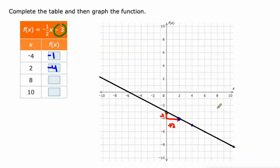When x is 8, y is negative 7. And again, half of 8 is 4. But it's a negative. So, negative 4 minus 3 is negative 7. There's some good mental math.